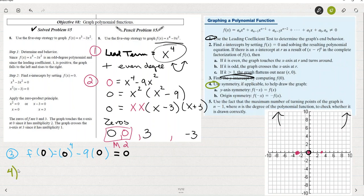So to determine symmetry, we want to know if it's even or odd. And the way we do that is we find f of the opposite of x. So if f of x equals x to the fourth minus nine x squared,